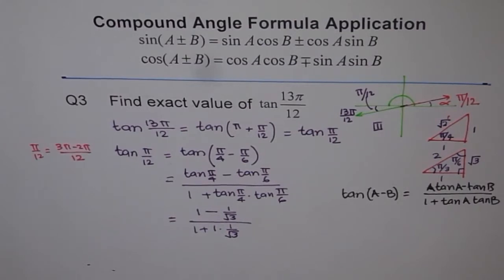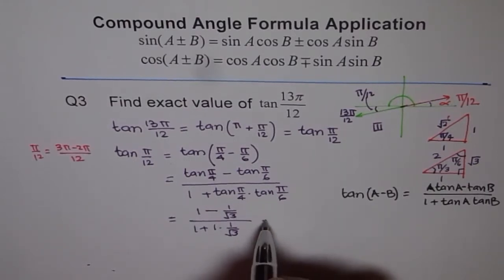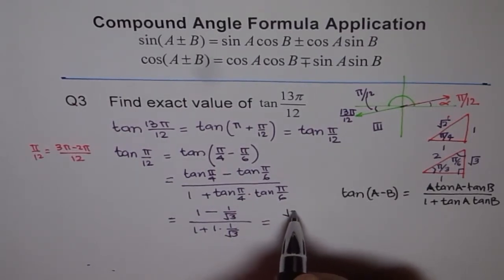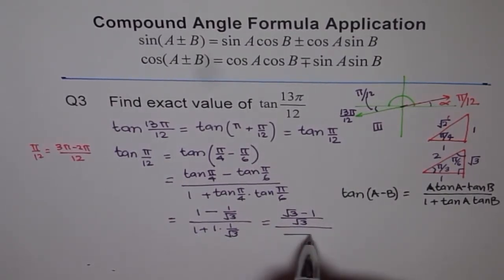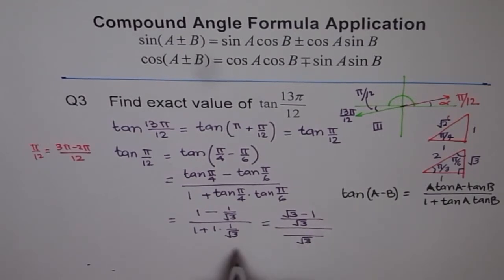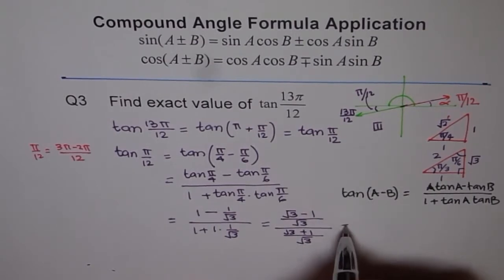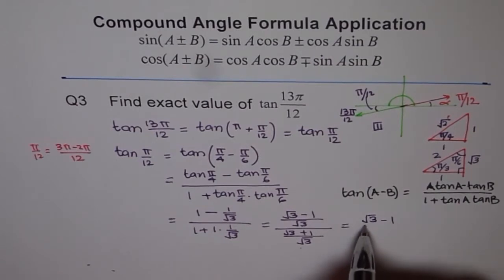So we get: 1 minus 1 over √3, divided by 1 plus 1 over √3. This can be simplified by taking √3 as the common denominator. The numerator becomes (√3 minus 1) over √3, and the denominator becomes (√3 plus 1) over √3. The √3 denominators cancel, giving us (√3 minus 1) divided by (√3 plus 1) as our answer for tan(π/12).